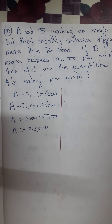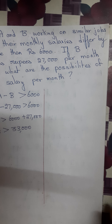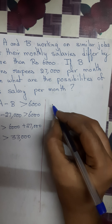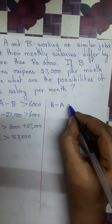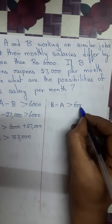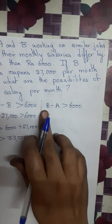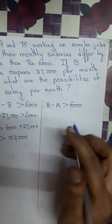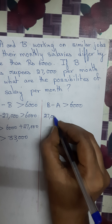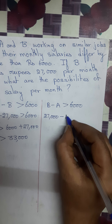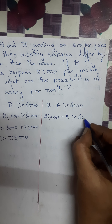Now let us see the next possibility. Suppose B is getting more salary, then it will be like this: B minus A should be greater than Rs. 6,000. Now we know the salary of B is Rs. 27,000. Let me substitute: instead of B, Rs. 27,000 minus A is greater than Rs. 6,000.